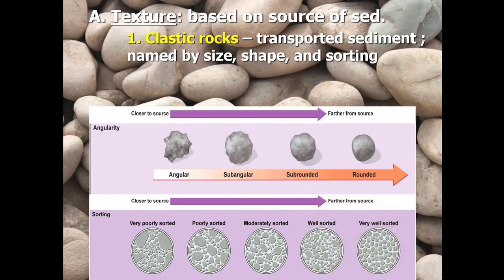Sorting refers to how particles relate to one another in size. A poorly sorted sample has a variety of grain sizes — large, medium, and fine-grained all mixed together — typical of a landslide deposit or something very close to the source area. As particles are picked up and carried by water, wind, and ice, the larger particles break down into smaller pieces of about the same size. Once the particles are about the same size, we say they are well sorted; when there's a variety of sizes, we say they're poorly sorted.